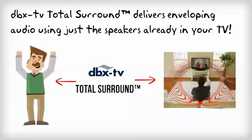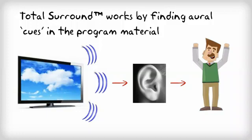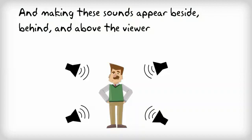Total Surround works by finding aural cues in the program material and making these sounds appear beside, behind and above the viewer.